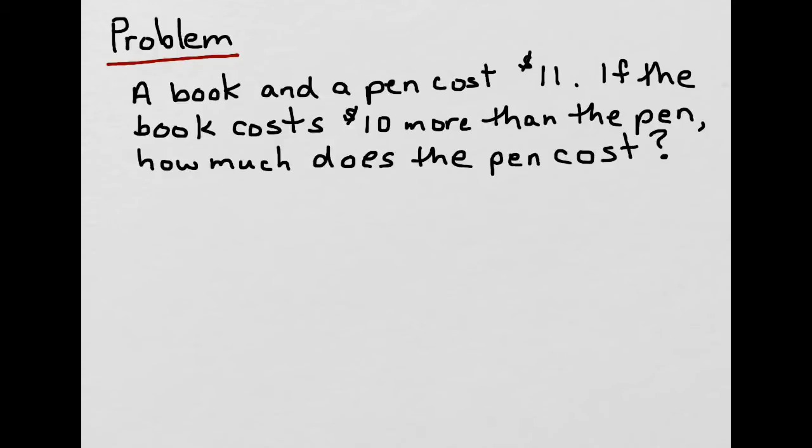Most folks misinterpret the problem and come up with an incorrect answer on their first try. For example, someone might do the following. They could say, well, I've got a book here, and I've got a pen. And then say, when I add these two together, I'll come up with $11.